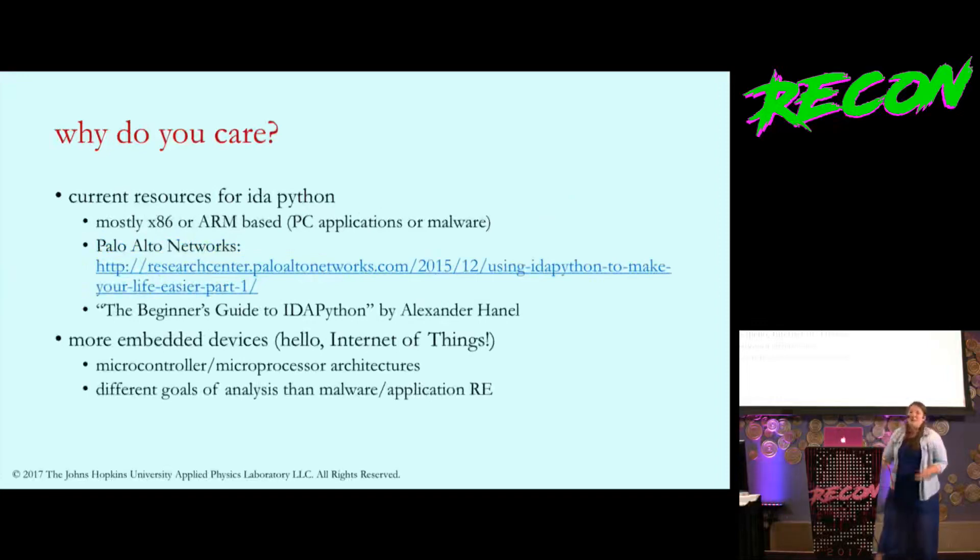But why do you care? We've heard talks about IDA Python before, but most of the resources out there are for x86 and ARM-based systems looking at malware or software applications. What I needed is how to leverage the inherent pieces of reversing firmware microcontrollers and use IDA Python to speed up that process. There are great resources from Palo Alto Networks and Alexander Hanel. But I wanted to start building up the same level of tools for microcontrollers and microprocessors that we have for x86 and ARM.